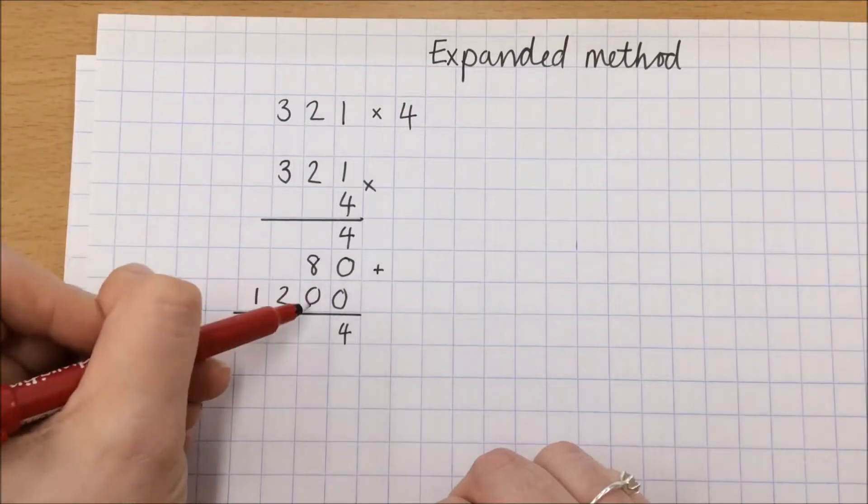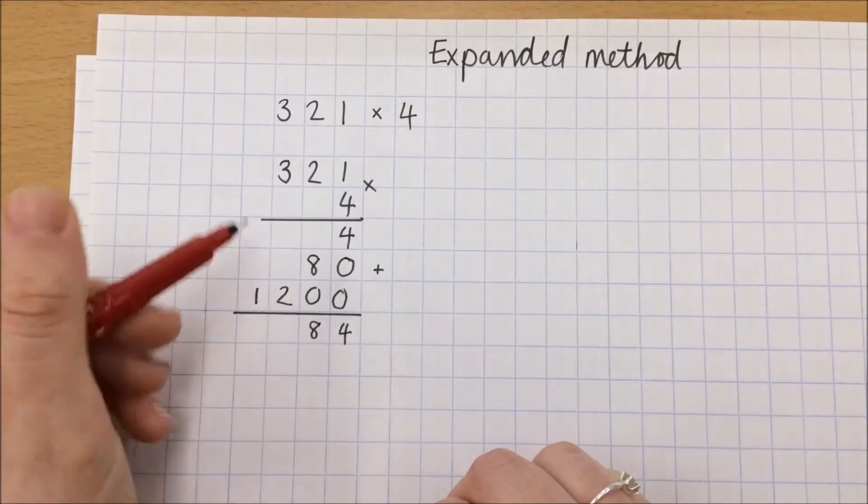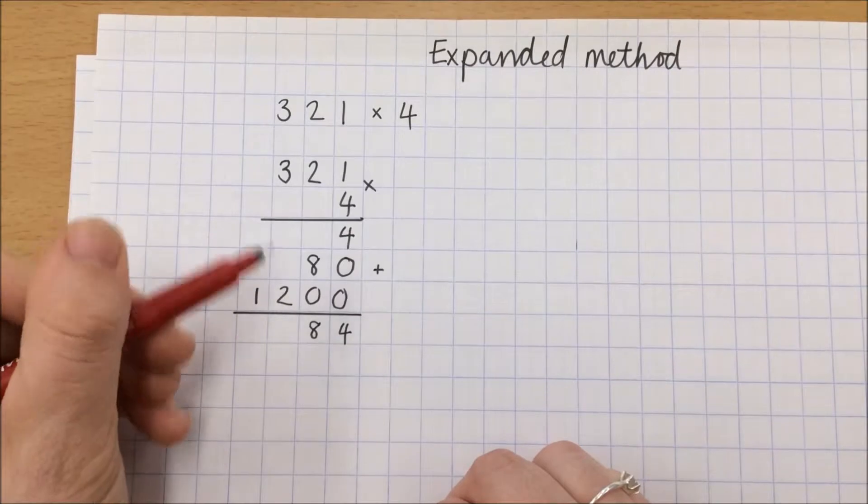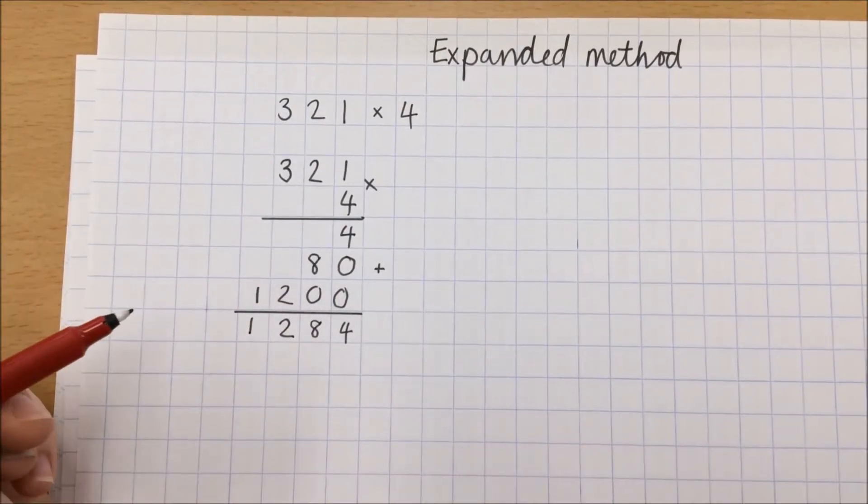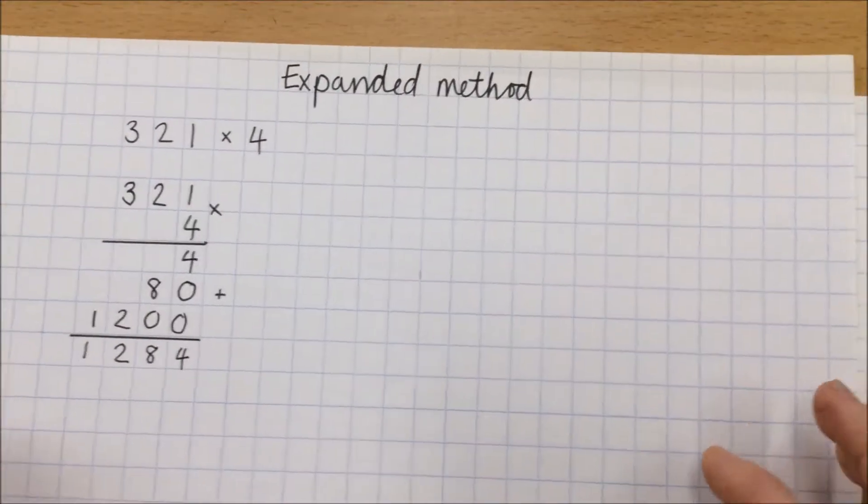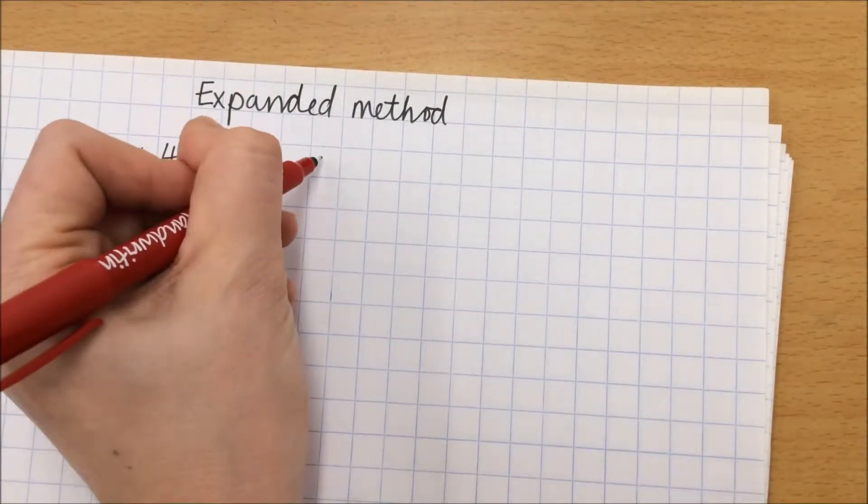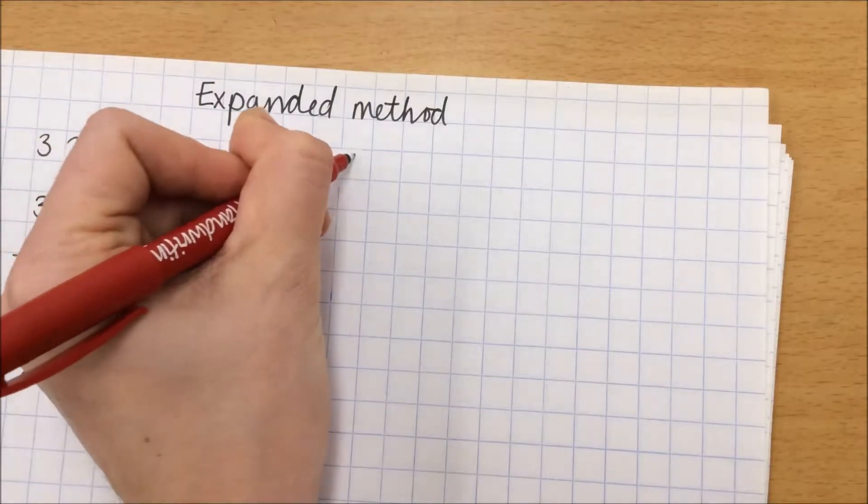8 tens, 80 plus 0 is 80. 2 hundreds plus nothing is 2 hundreds. And 1,000 plus nothing is 1,000. And this works in the same way if we were doing a two-digit calculation by two-digit.